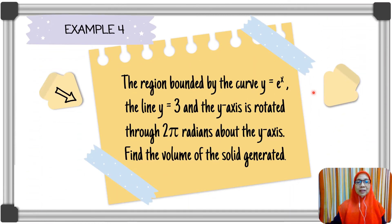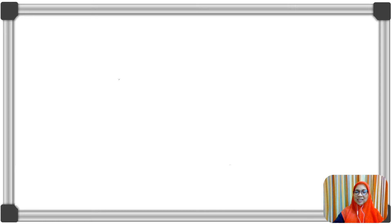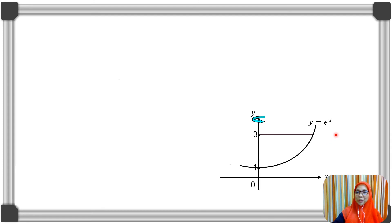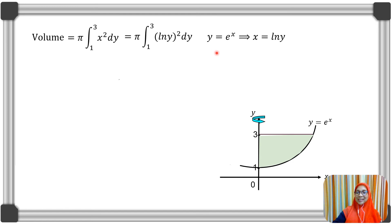Next example: the region bounded by the curve y = eˣ, the line y = 3, and the y-axis is rotated through 2π radians about the y-axis. Find the volume of the solid generated. The volume of revolution is π times the integral of x² from y = 1 to y = 3. Now, x = ln y, which is obtained from y = eˣ by taking ln of both sides, giving x = ln y.